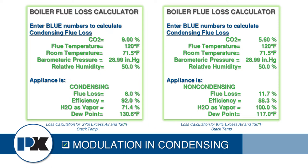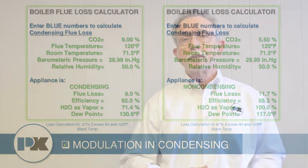Looking at the flue loss calculator: on the left side with 22% excess air for a five to one turndown, the flue temperature is 120 degrees — well below the dew point, so we condense and exceed 90% efficiency. However, that same boiler at 20 to 1 turndown using the excess air method also shows 120 degrees flue temperature, but the dew point has dropped to 117 degrees, so we're not going to condense. This is really the crux of the problem.